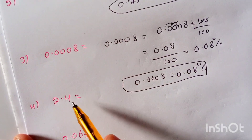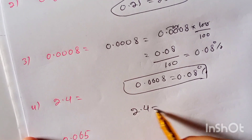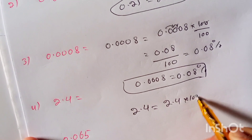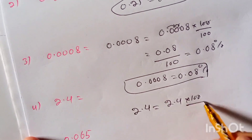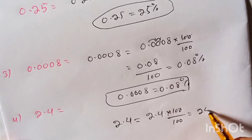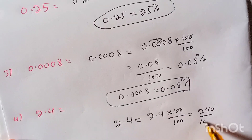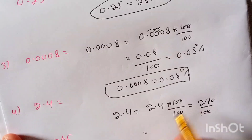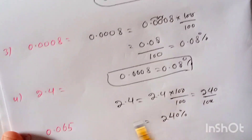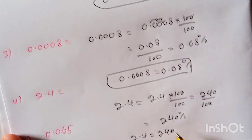Now, what is 2.4 in percentage? So 2.4 is equal to 2.4 multiplied by 100, divided by 100, which is equal to 240 divided by 100, which is equal to 240 percent. So 2.4 is equal to 240 percent.